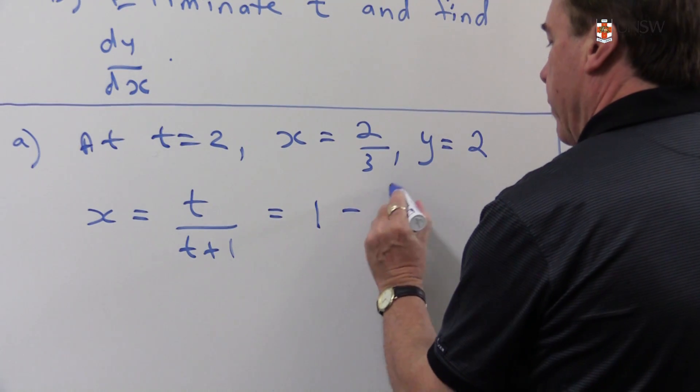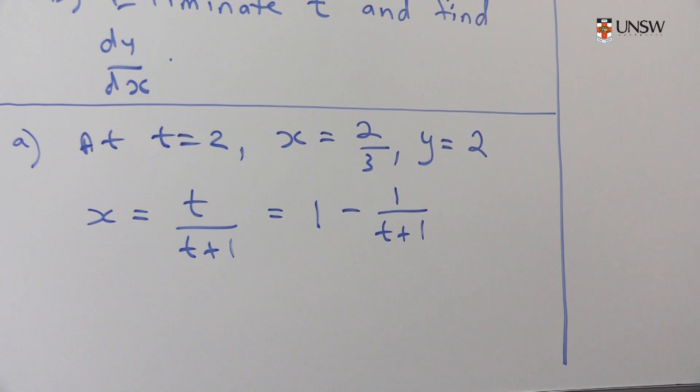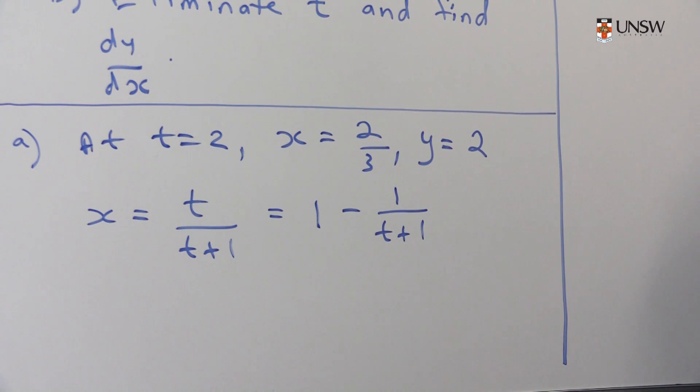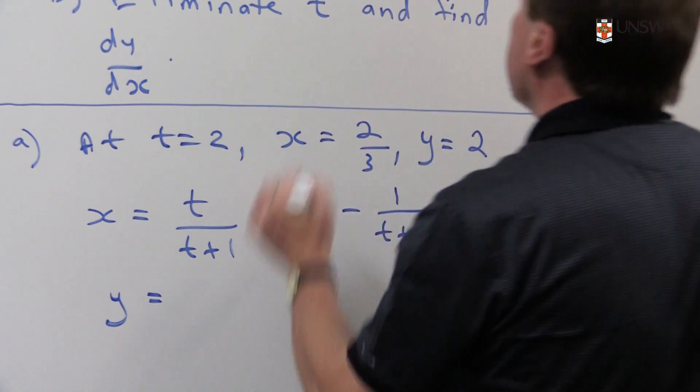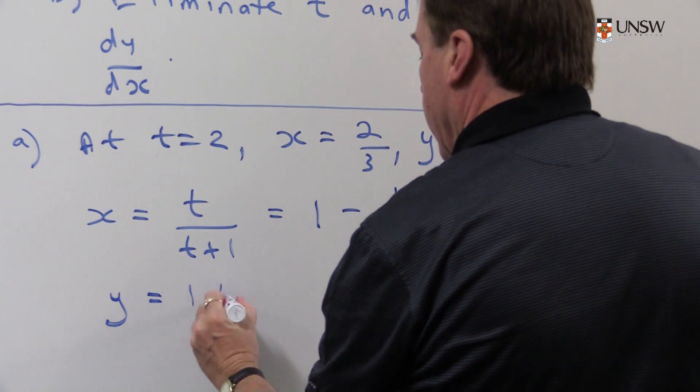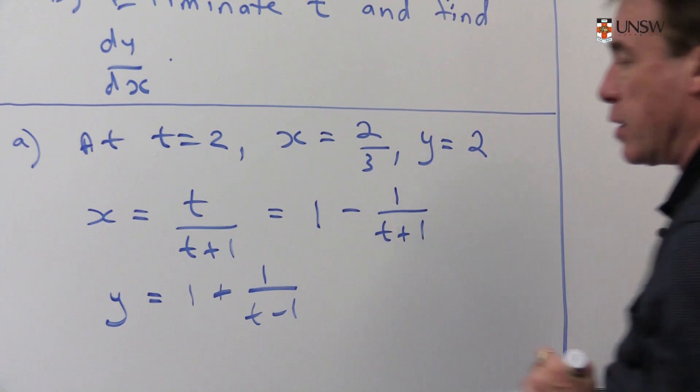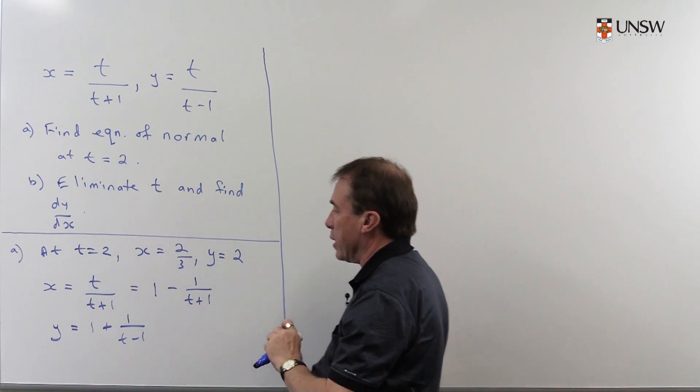It makes the calculus just a little bit easier. So I'm adding 1 to the top and then subtracting 1 and then I can do some cancelling. And that, I can do the same thing with the y. So here I'd subtract 1 from the top and then add 1. So I get that expression. Don't have to do that. You can just use the quotient rule to get the derivatives.